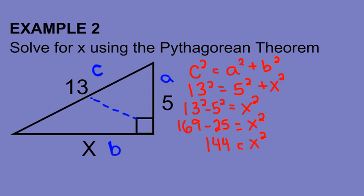And again, I don't need to know what x squared is. I need to know what x is. So I'm going to have to take the square root of each side. Square root of 144 is 12. And the square root of x squared is x.